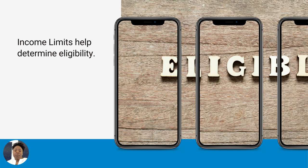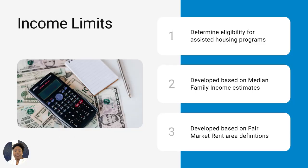So what are income limits? Well, they help determine eligibility. HUD established them so that they help you determine whether an applicant actually qualifies to live on a HUD-subsidized property. They're based on family size and the income that the family receives. They're developed based on the median family income estimates and also on fair market rent area definition, so it's very important to look at that website and find the income limits for your area.